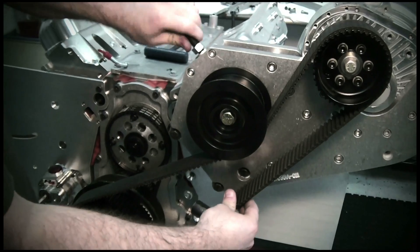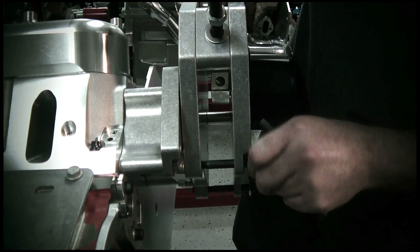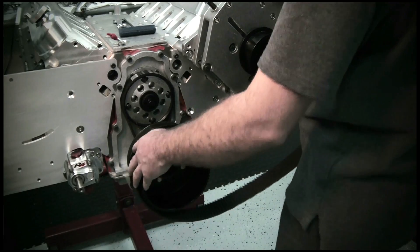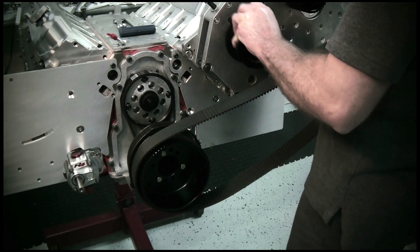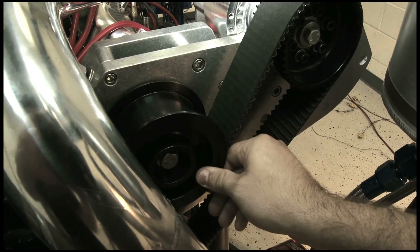We have the cog belt system which includes the bracket, which is a very sturdy piece made out of three-quarter inch aluminum. The cog belt is a 50 millimeter cog belt, very good for high horsepower applications, very beefy tensioner you see.